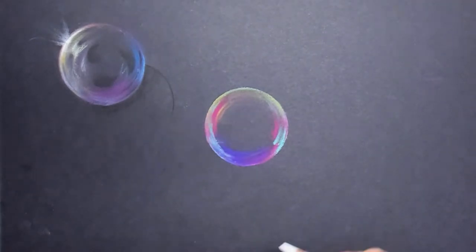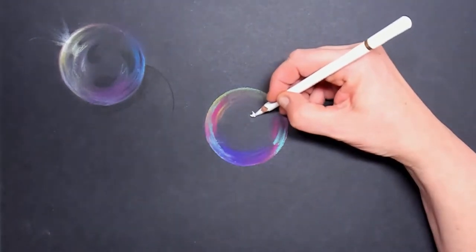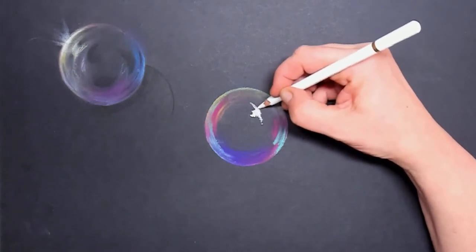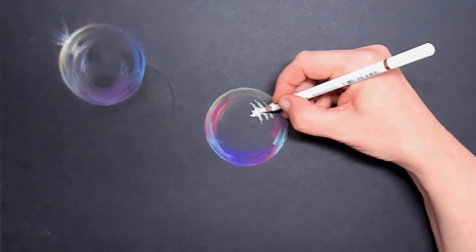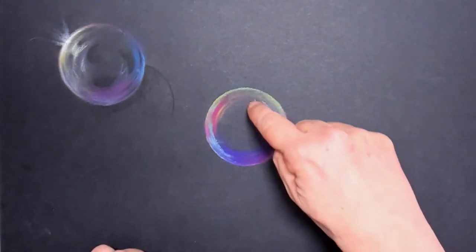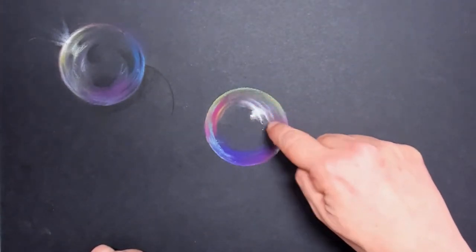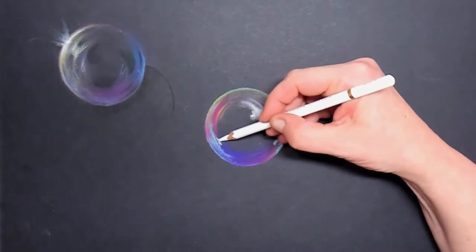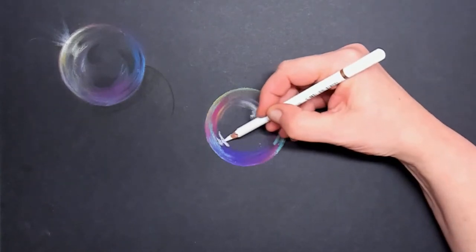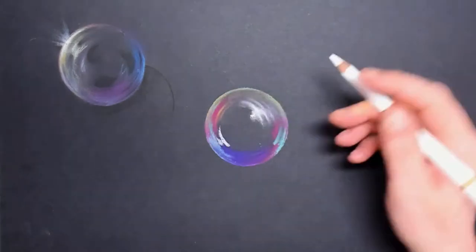Let's try some white. Now the white is for the real highlights on that soap bubble. So I place in a little bit of white and then softly rub it in with my finger. I also do that on the left side of the bubble.